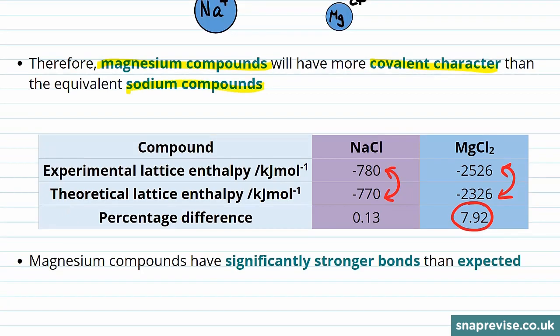The fact that the experimental lattice enthalpy for magnesium is much greater than the theoretical prediction means that more energy is given out when the bonds are formed, so we form significantly stronger bonds than expected with the magnesium compounds.